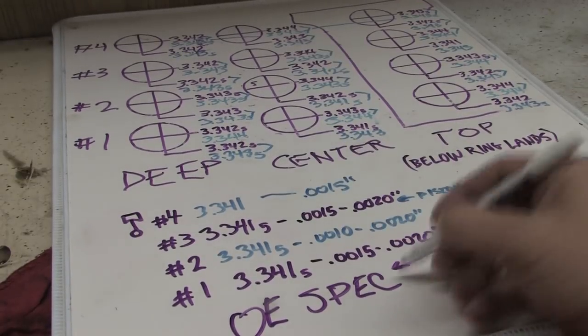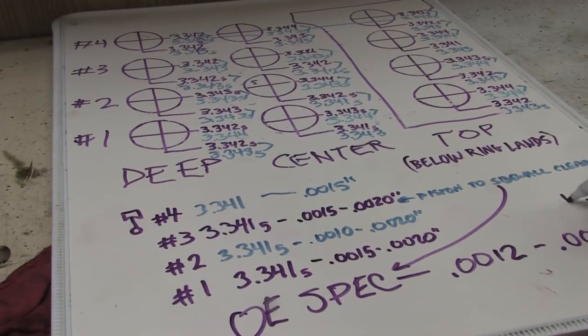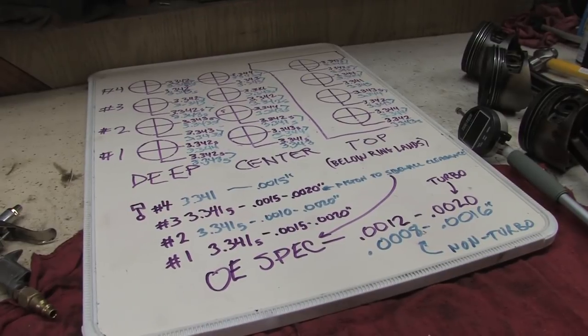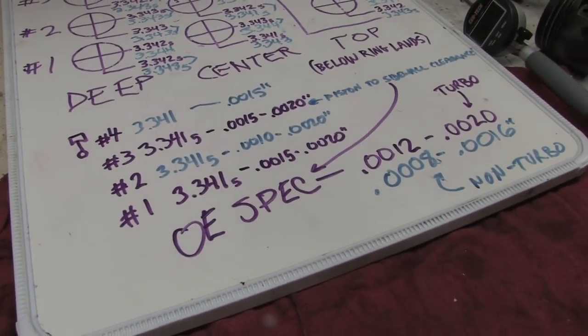Factory spec for all turbo 4G63 engines is 12 to 20 ten-thousandths of an inch. Factory spec for all 4G63 non-turbos is 8 to 16 ten-thousandths of an inch.